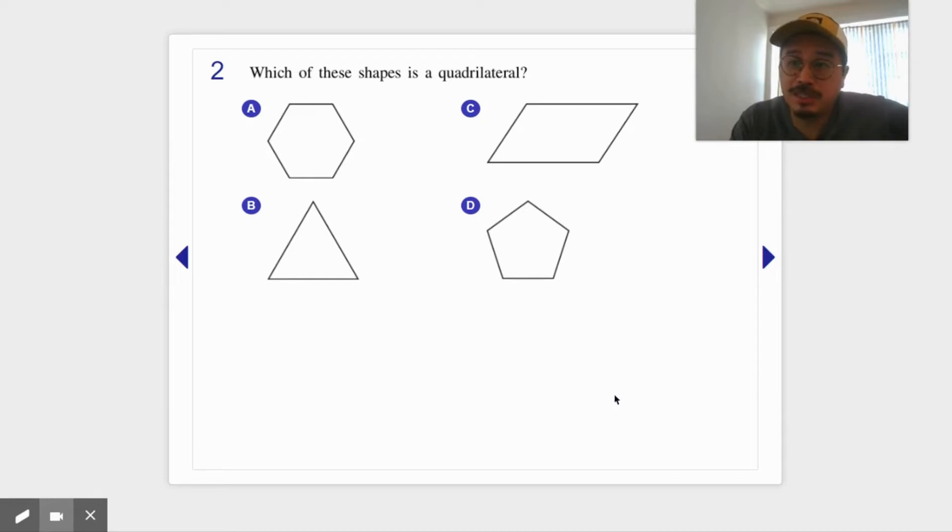Number two - now you're gonna see this, I'm gonna tell you now you're gonna see one question like this where I'm asking if you know what a quadrilateral is. Hopefully you'll pick this - a four-sided shape, right?